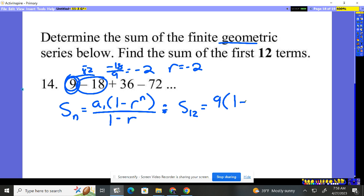1 minus what is r value? It is negative 2. Notice I put that in parentheses. And then n is what? We want 12 terms. I'll divide it by 1 minus negative 2.